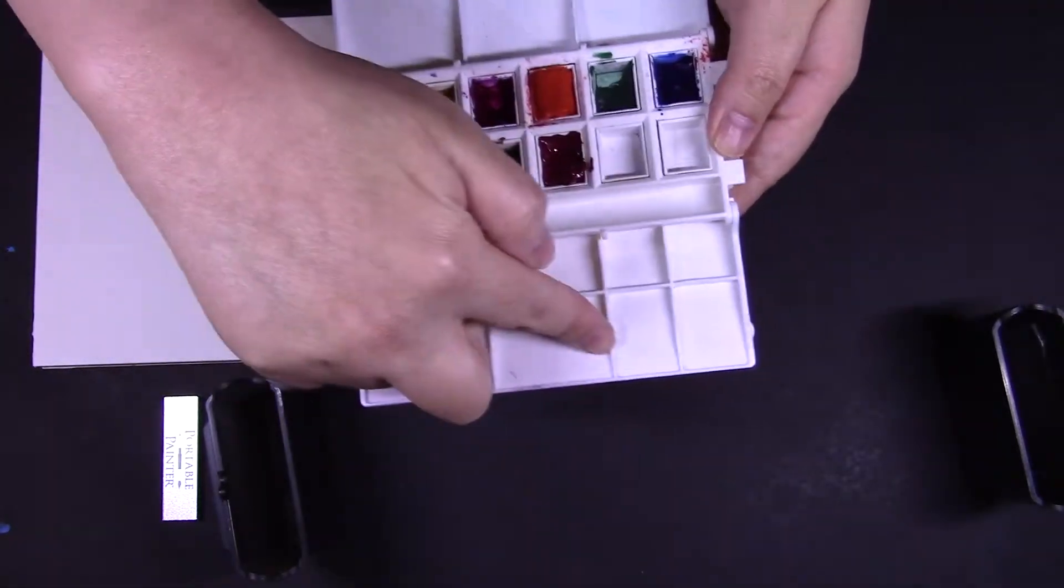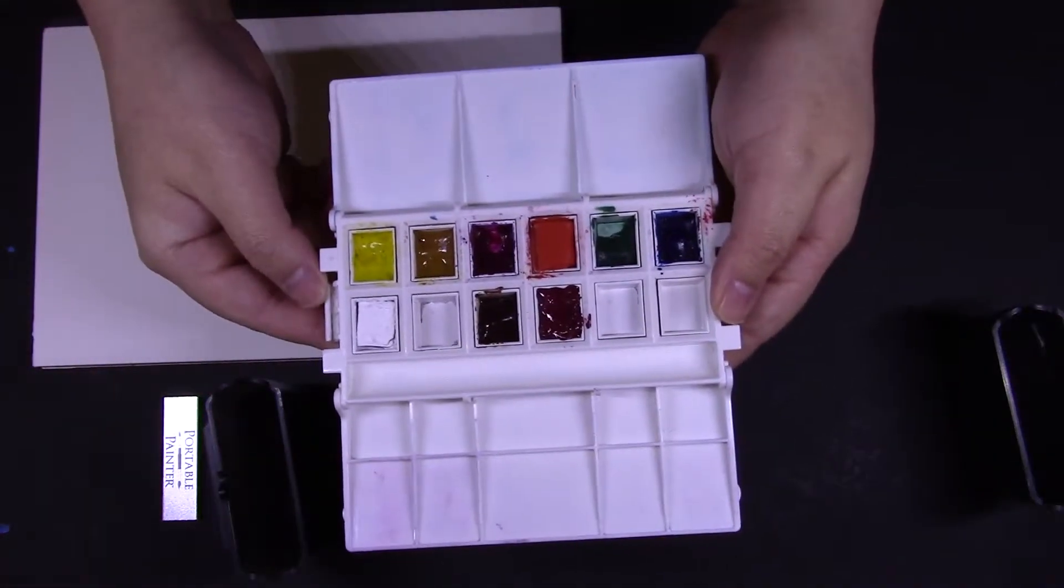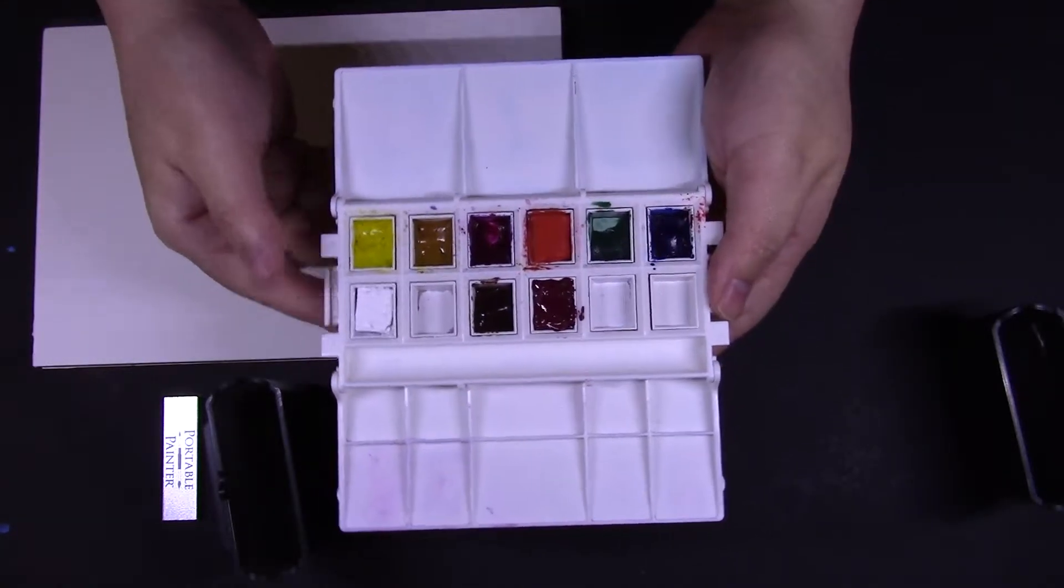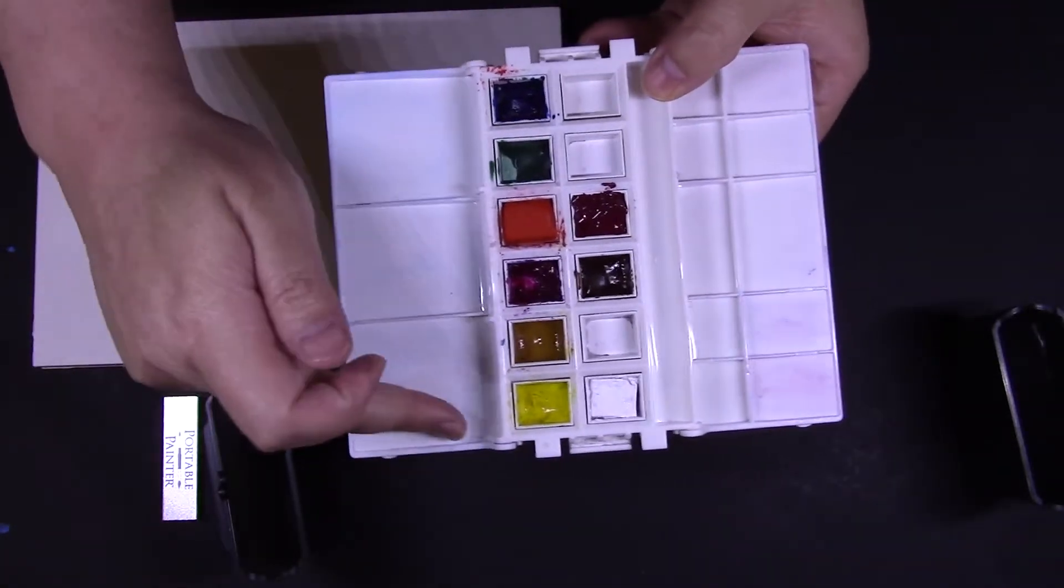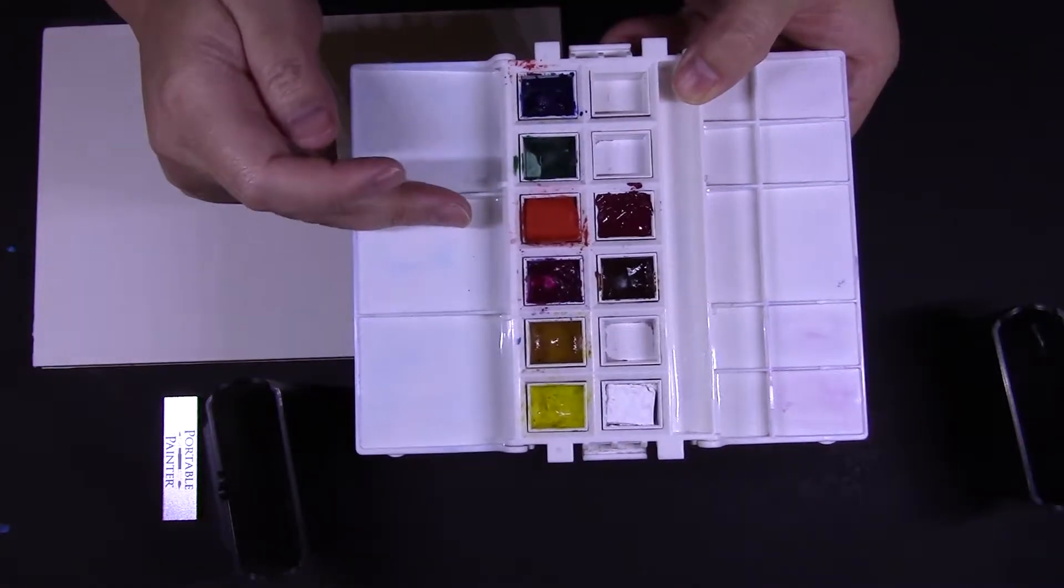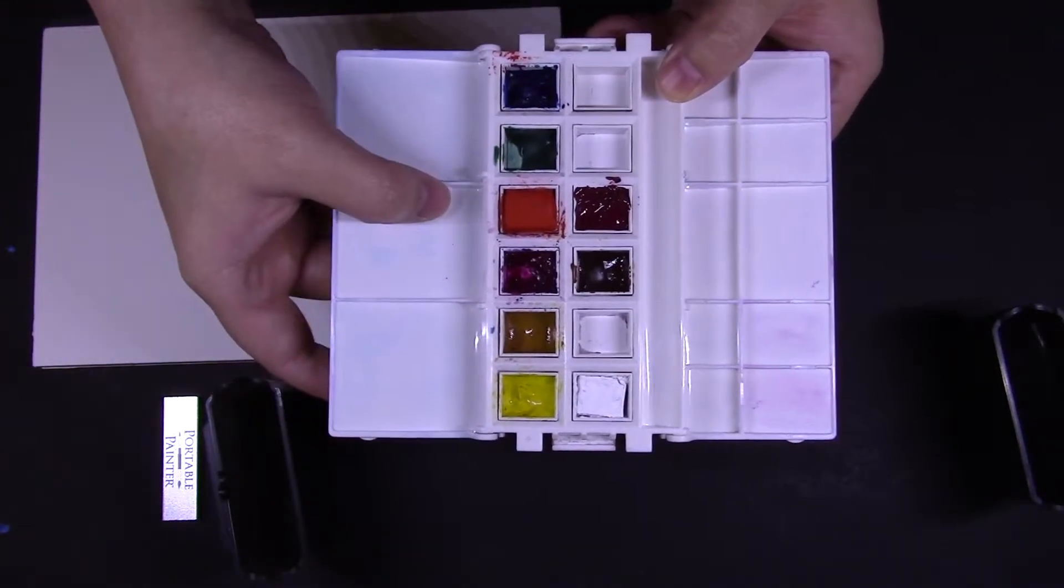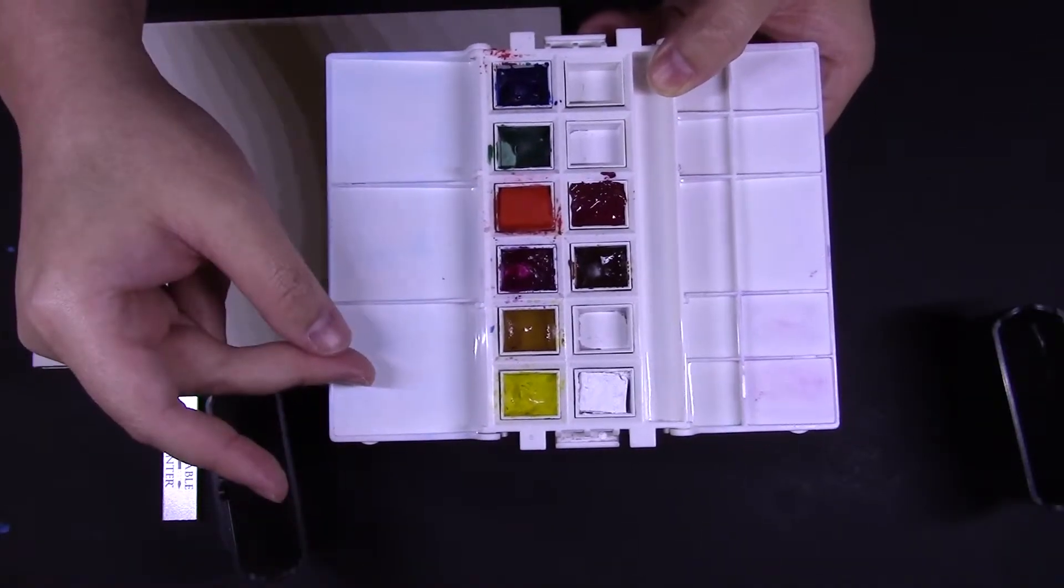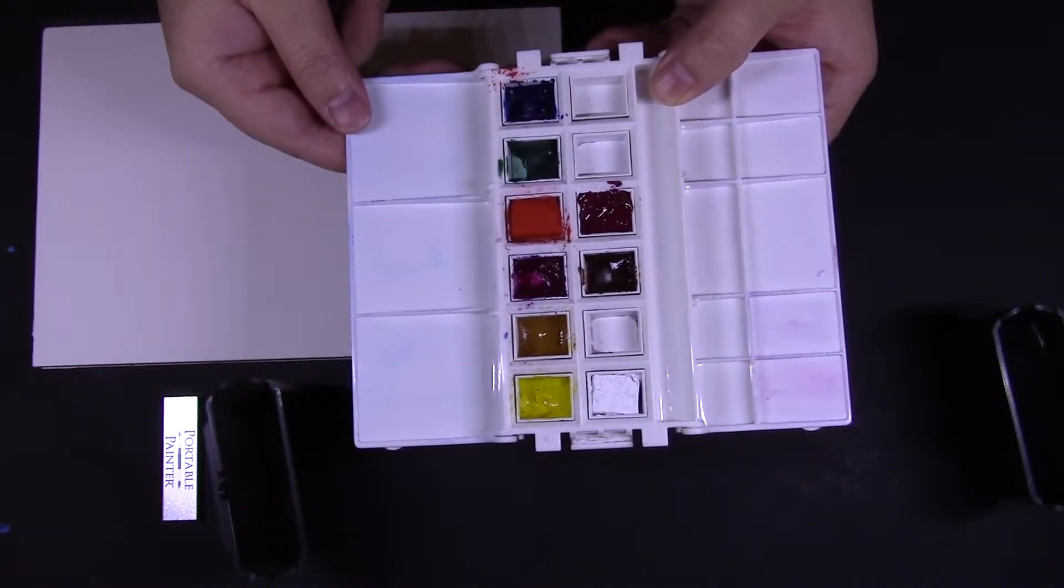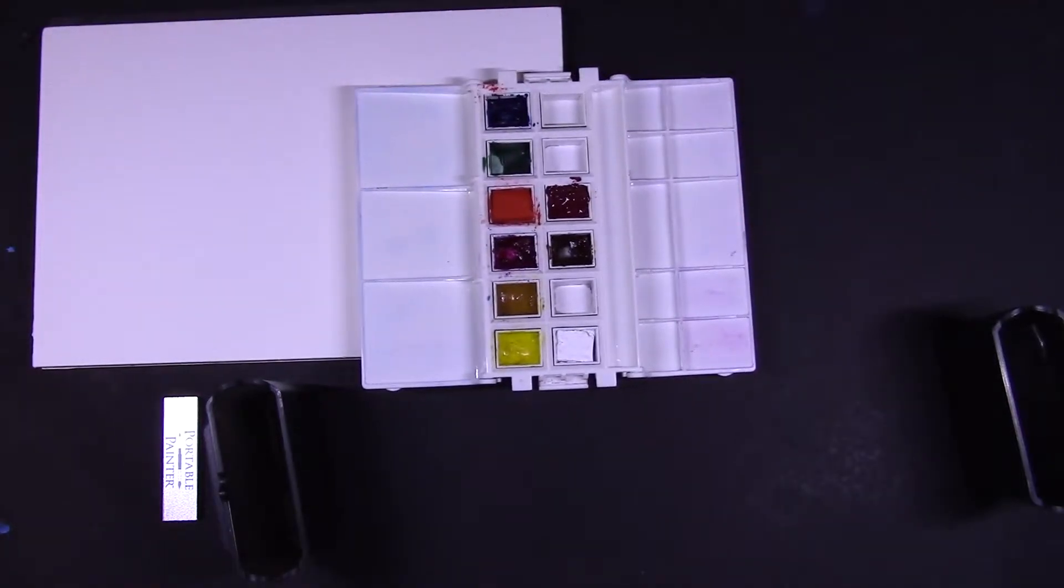Let's talk about the gazillion mixing areas. So these are huge. These are big. These are, I think, a little over one inch across. And so they can fit in a huge brush.